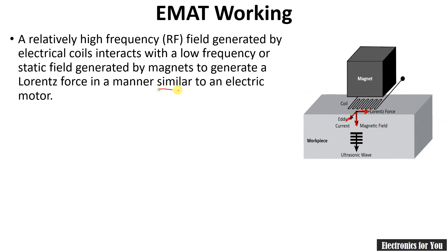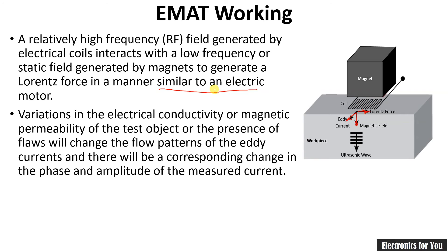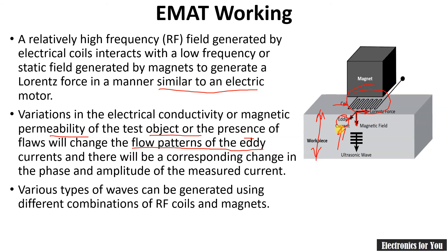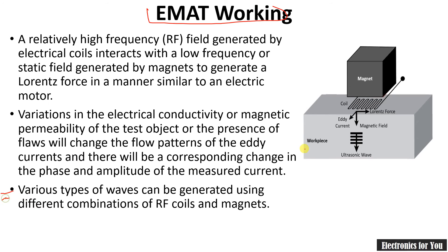This effect also occurs in electric motors. Variation in the electrical conductivity or magnetic permeability of the test object, or the presence of flaws, will change the flow pattern of the eddy current. As the magnetic permeability changes, there will be a change in the eddy current, and this change is measured and converted into a thickness measurement. Various types of waves can be generated using different combinations of the RF coil and magnets.